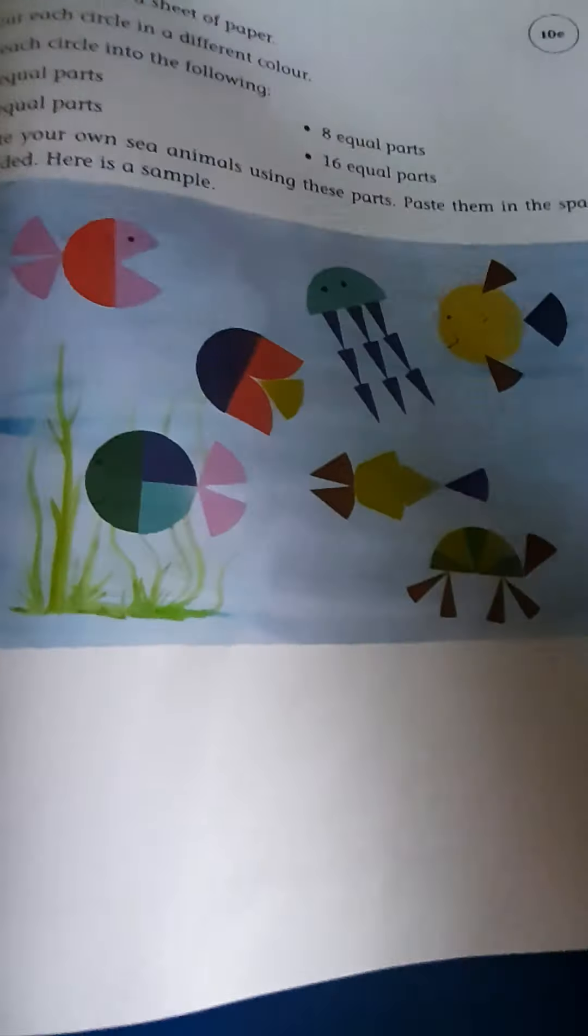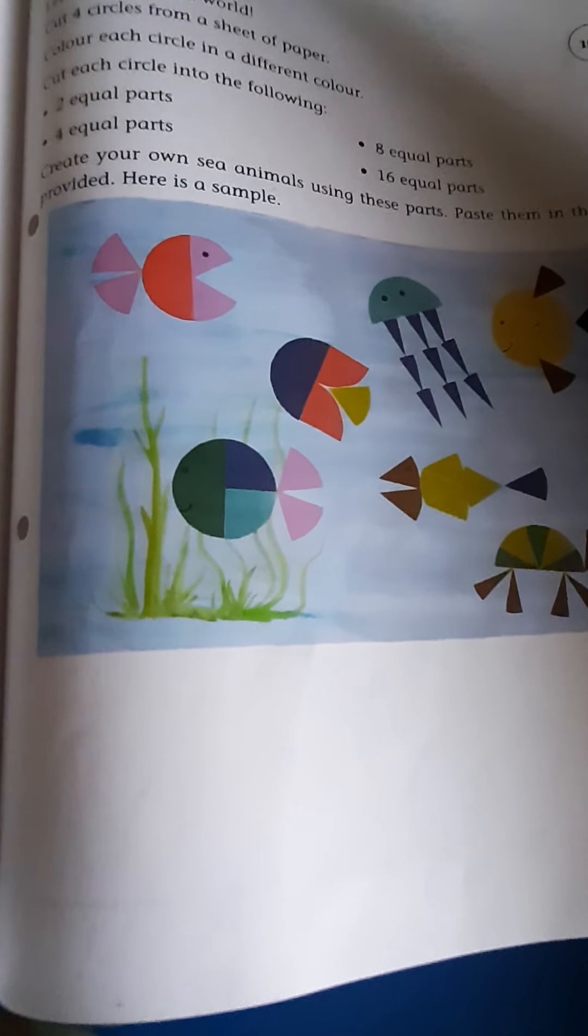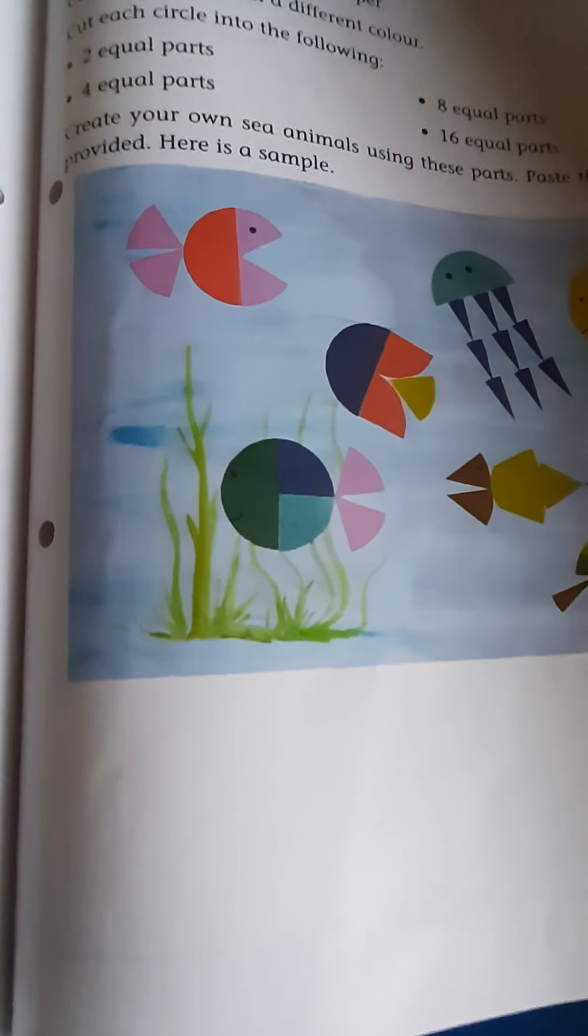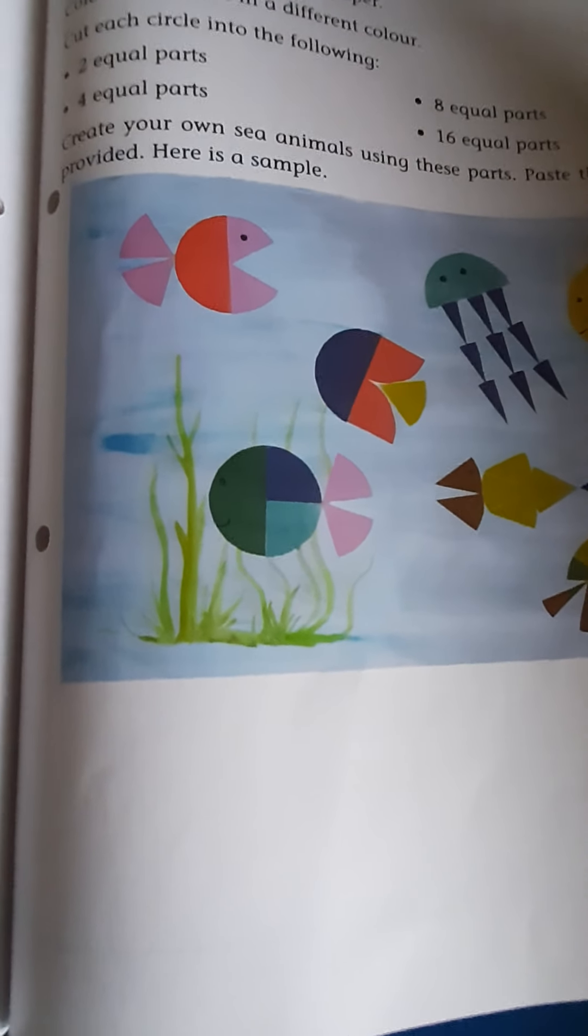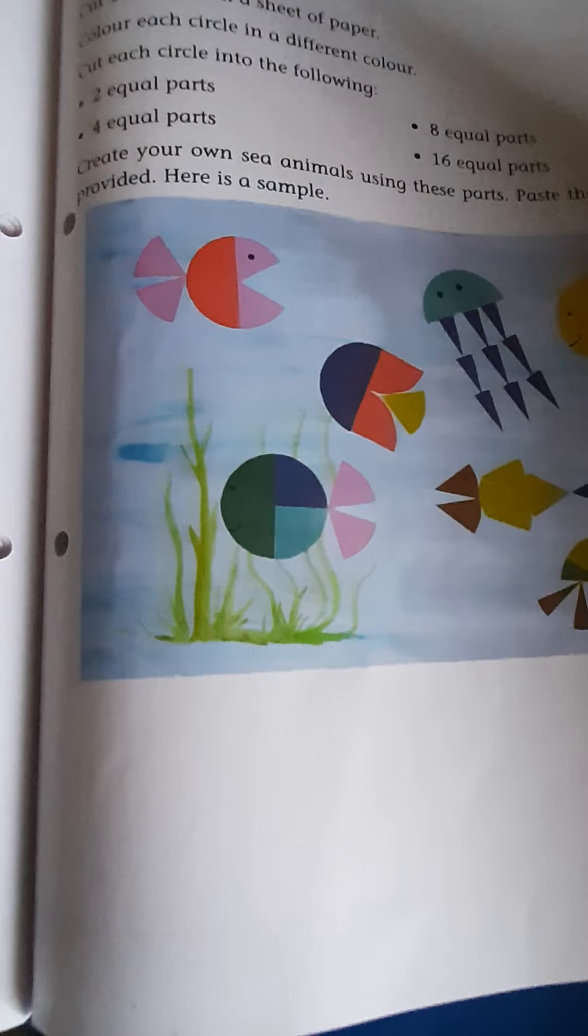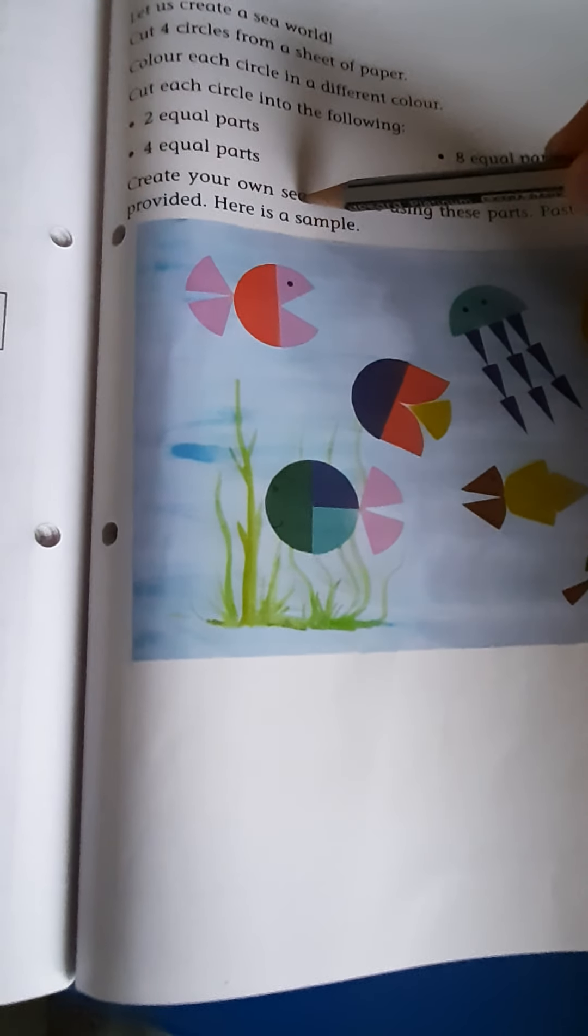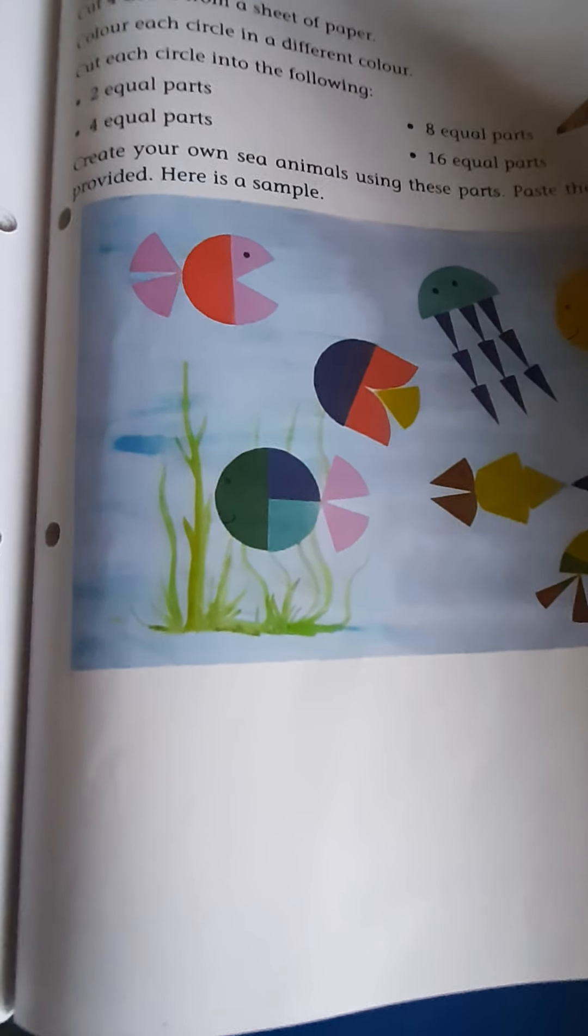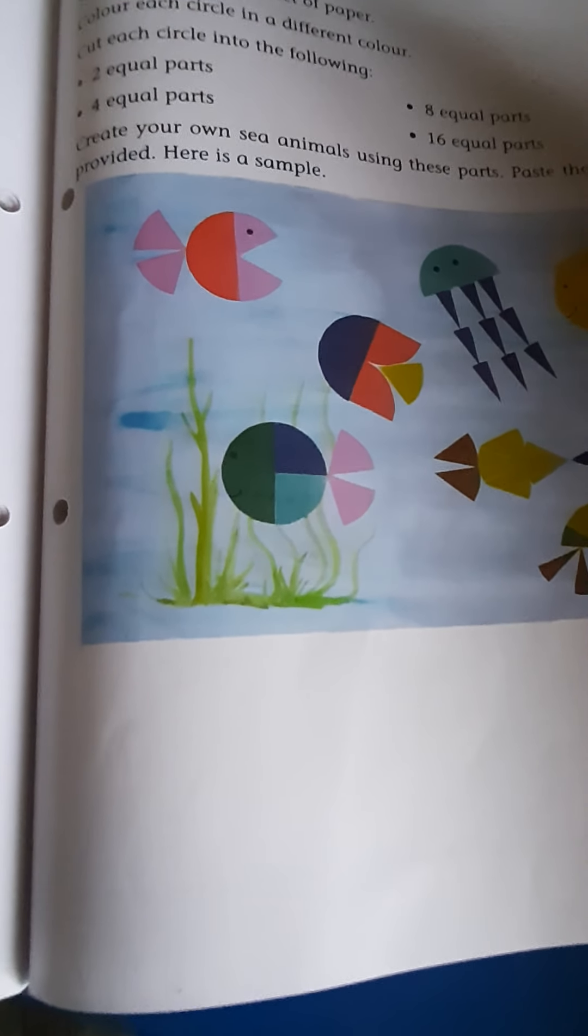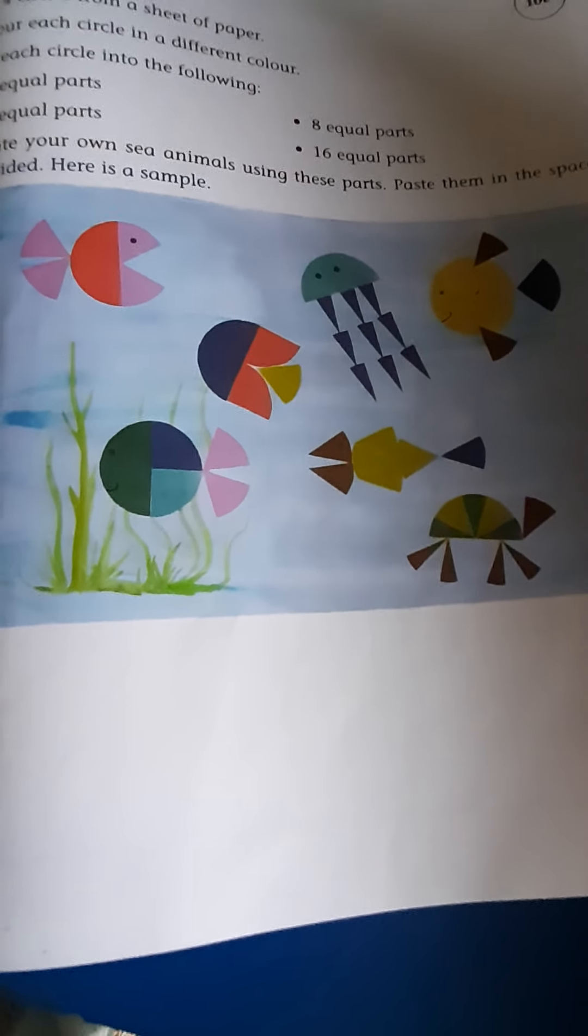I think are you clear children? So once again I am repeating. First you have to take one paper and cut into 4 circles. So after cutting 4 circles you have to color with different color. And then next cut into, cut 4 circles into first one is 2 parts, second one is 4 parts, third one is 8 parts, and fourth one is 16 equal parts. If you cut and create your animals like this.